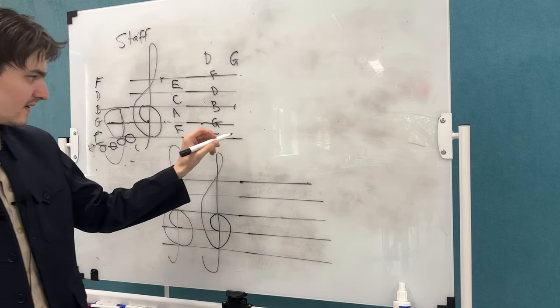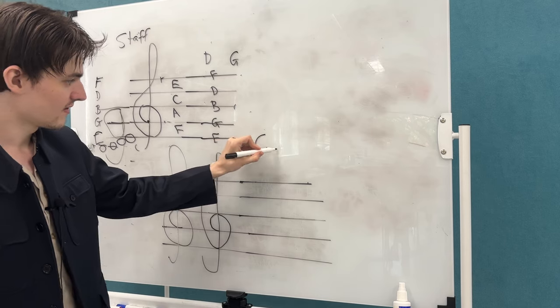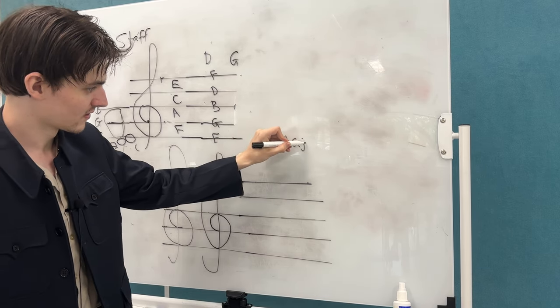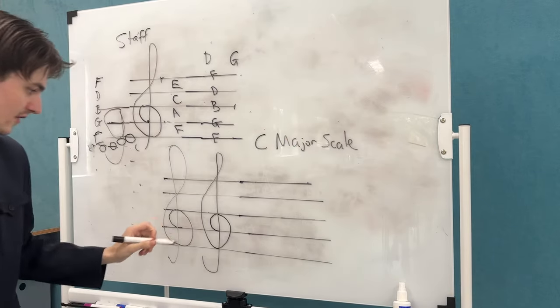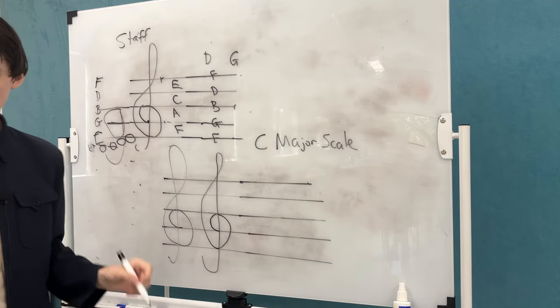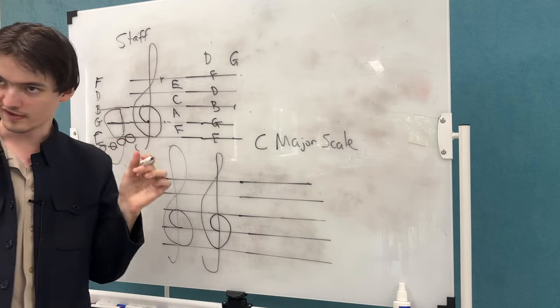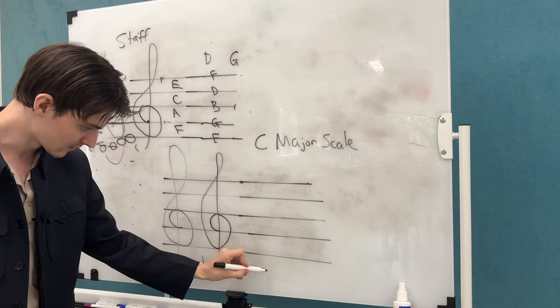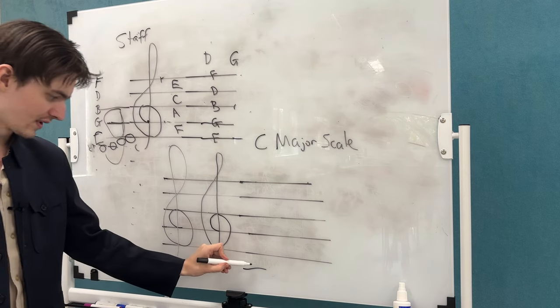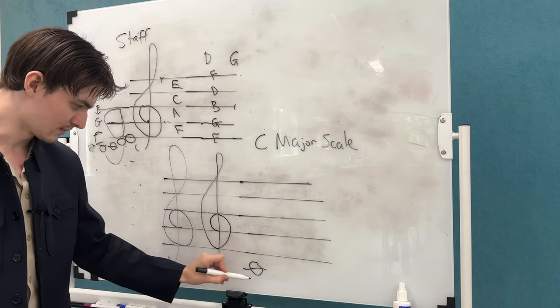Now the scale that we're going to do today is what we call a C major scale. The C major scale starts on that middle C that we just talked about. The middle C is the one that's below these five lines, on this line down here, that line just below the five lines being middle C.